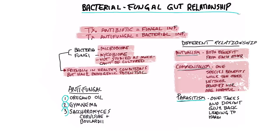If you have a candida infection or fungus growing in your toenails, there are things you can do instead of taking an antifungal with side effects. Oregano oil is the number one thing — you can take it as a supplement or even put it into a neti pot to infuse it into the sinuses for a sinus fungal infection. Another really interesting natural antifungal is gymnema, a plant that normally helps with diabetes. If you chew on gymnema, it actually blocks the taste of sweet. Oregano oil is really powerful, and gymnema is a really good one as well.